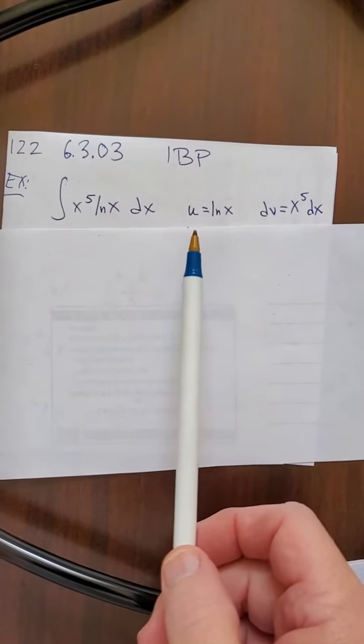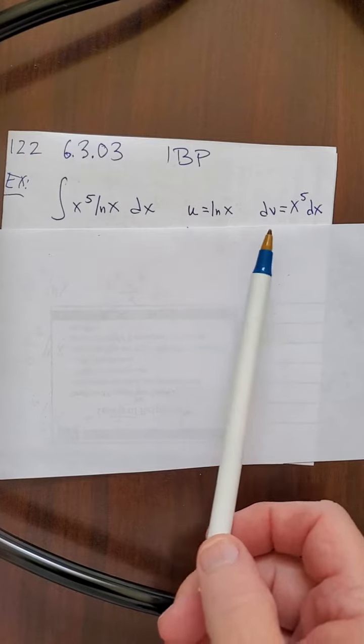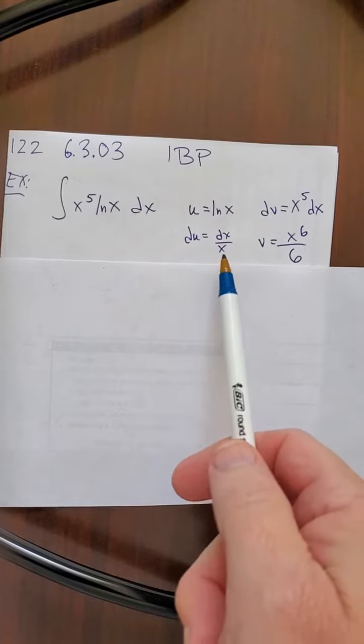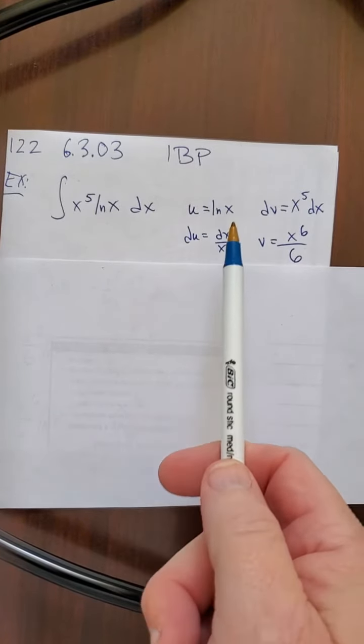And now I want you to pause and figure out what is du and what is v. Well done. du is dx over x, because the derivative of ln x is 1 over x.